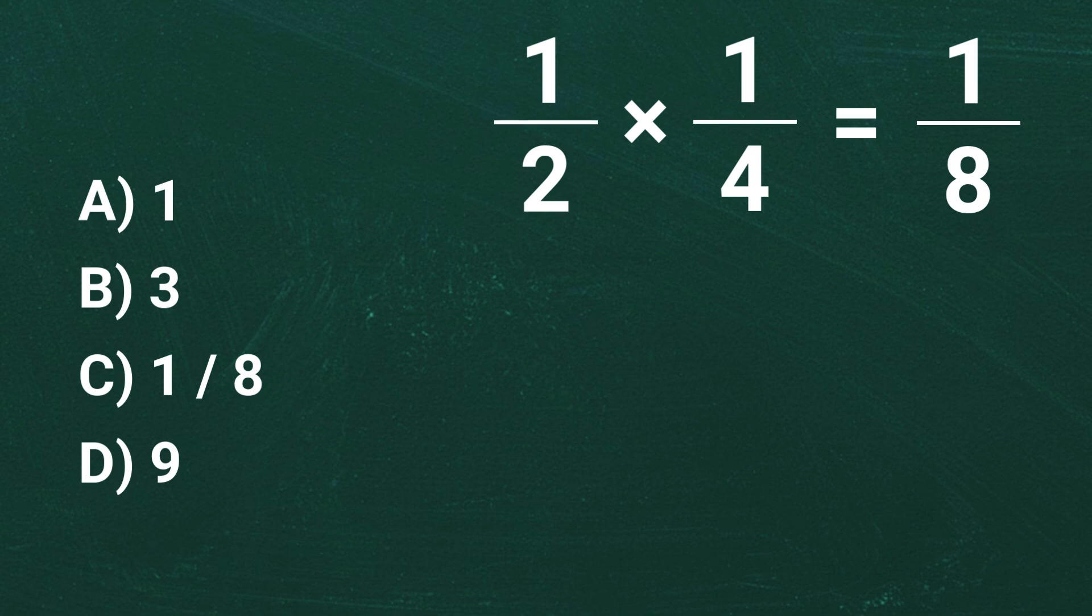And there you have it. The correct answer is C) 1 over 8. So did you get the right answer? If you did, awesome job. But if you made a mistake, no worries. Now you know exactly how to tackle problems like this.